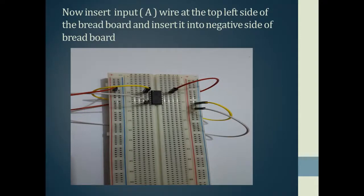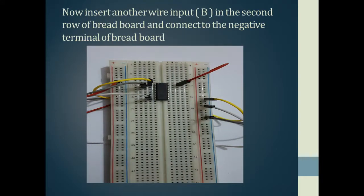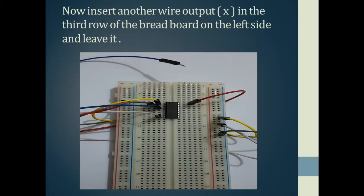In the OR gate, the first two pins are inputs and the third one is the output. Now inserting the input A wire at the top left side of the IC and connecting it to the negative side of the breadboard — you can see the yellow wire which represents input A. Then inserting another wire for input B in the second row of the IC and connecting the other end with the negative side of the breadboard.